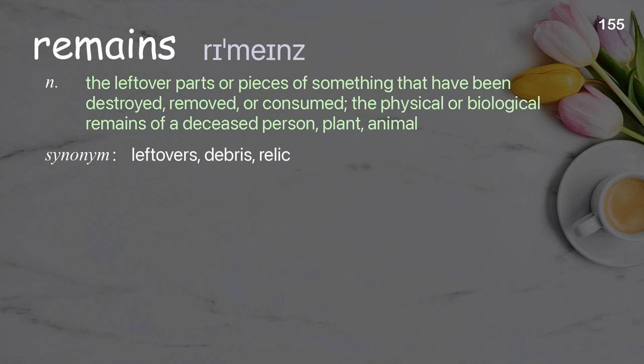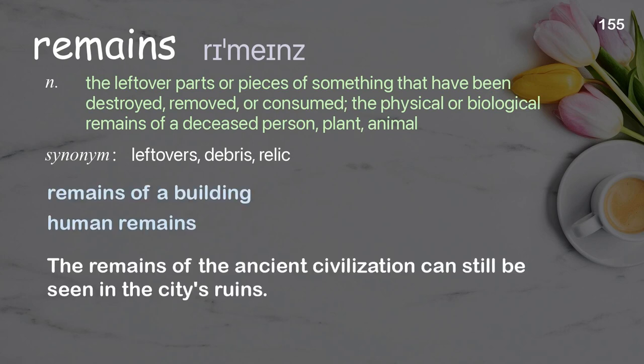Remains: the leftover parts or pieces of something that have been destroyed, removed, or consumed; the physical or biological remains of a deceased person, plant, or animal. Examples: remains of a building, human remains. The remains of the ancient civilization can still be seen in the city's ruins.